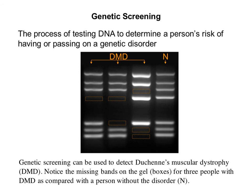Another thing we can do with gene technology is genetic screening — the process of testing DNA to determine a person's risk of having or passing on a genetic disorder. This is something that a lot of people do as part of their family planning. When a couple decides to have a child, if they know there's a history of disease in either parent's family, they can get tested and see if they have a high probability of passing that on to their future child. These tests can also be done once a woman is already pregnant on the fetus to determine if they're going to have a disease.